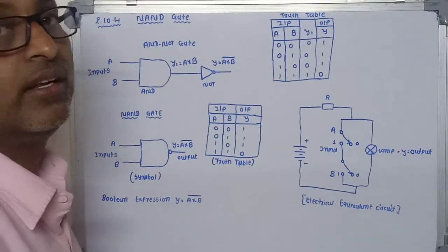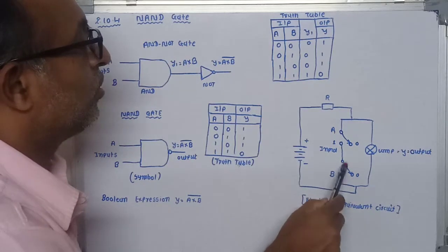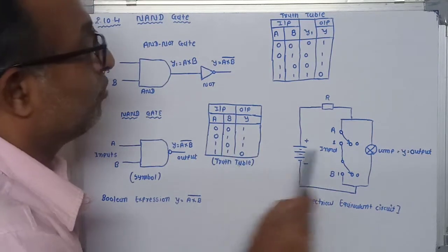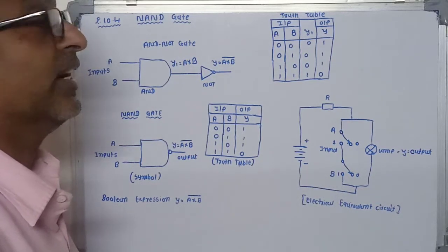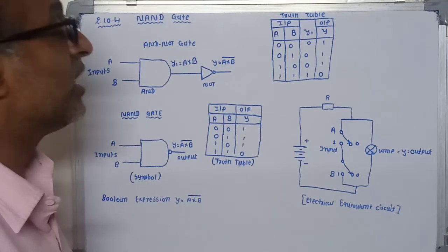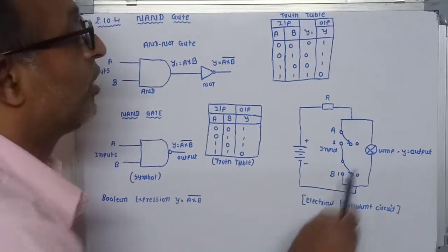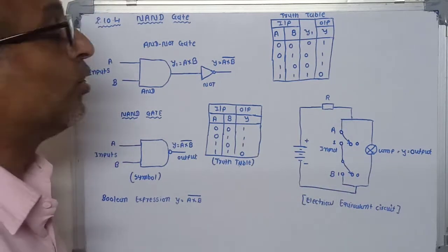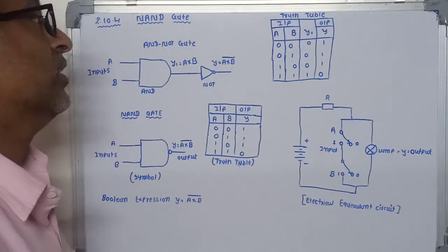The current still passes through the lamp and it remains in the ON condition, so the output is one. Similarly, if A is closed and B is zero, the output of the lamp is still one. Now when both switches are at position one — both closed — the lamp is short-circuited by this wire. Any equipment short-circuited by a wire is replaced by zero resistance, so no current passes through the lamp. The lamp remains OFF, meaning the output is zero.